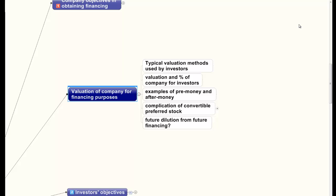Valuation can be determined in a simple way when investors acquire X percent of the company for Y dollars. For example, assume a group of investors invests one million dollars into an early-stage company by buying convertible preferred stock, and the investors negotiated to own one-third of the company after their investment. That places a three million dollar valuation on the company — one million dollars is one-third, or 33 percent, of three million dollars. The terms we use are pre-money and after-money valuation. The pre-money valuation was two million dollars — that's the value the investors assigned to what the founders own. The investors own one million dollars of the three million dollar post-money valuation.